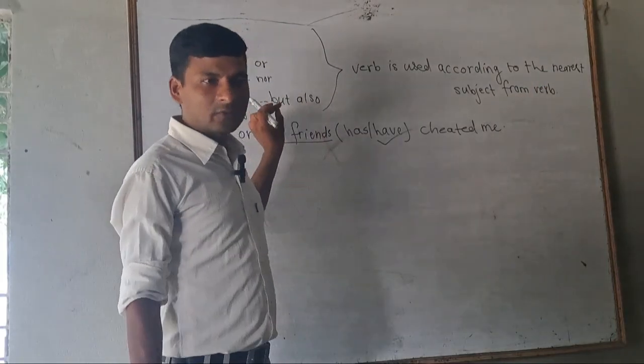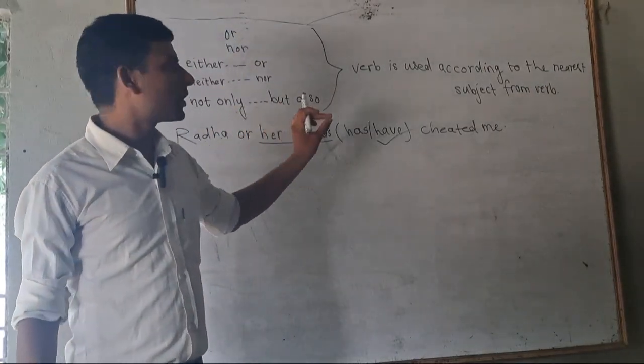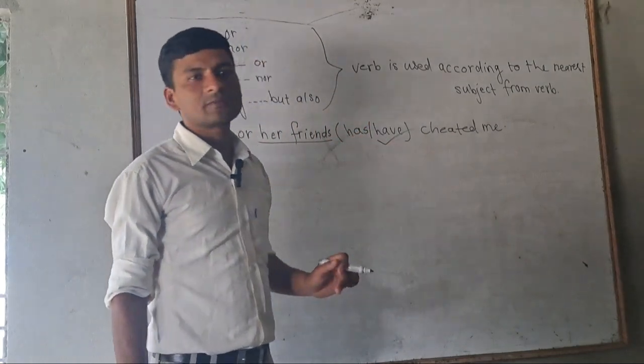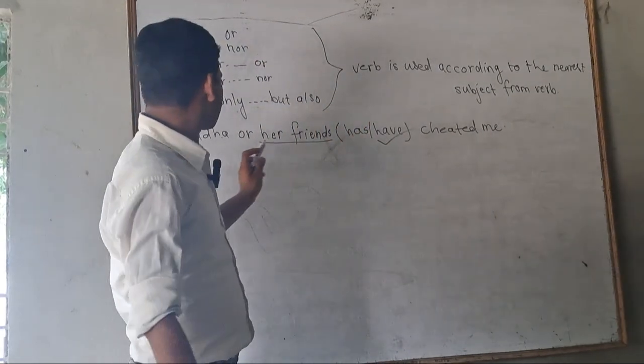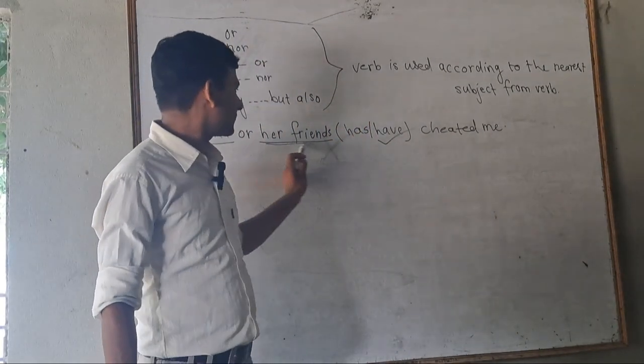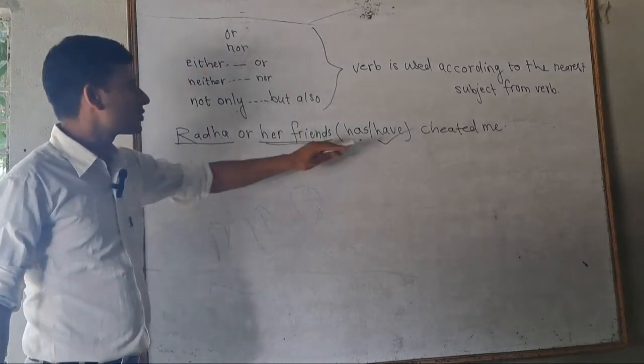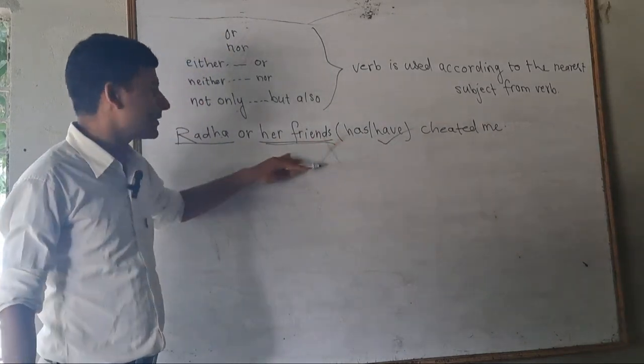Cheated me. If two subject joined with these words, the verb is used according to the nearest subject from verb. This is one subject, this is another subject, joined with or. So nearest subject from verb is her friends, so we use have.